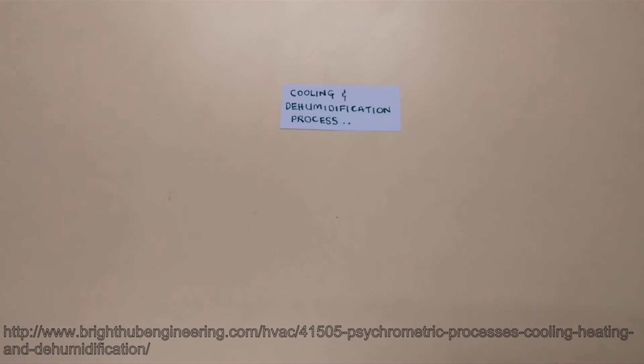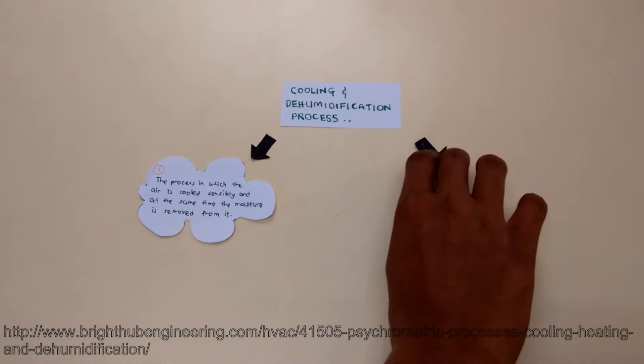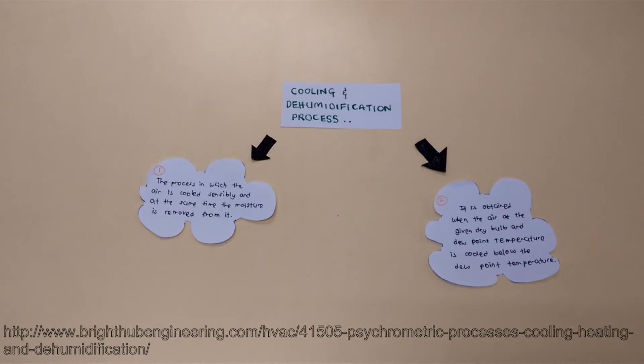Cooling and dehumidification process: the process in which the air is cooled sensibly and at the same time the moisture is removed from it. It is obtained when the air at the given dry bulb and dew point temperature is cooled below the dew point temperature.